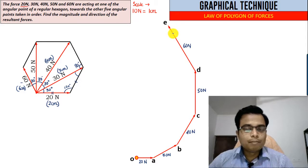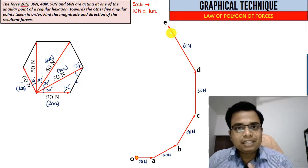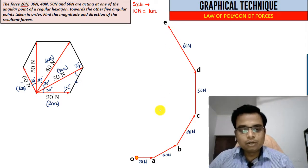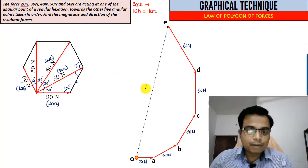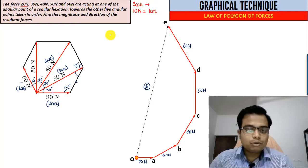But the resultant will be taken in the opposite order to complete the polygon, and this is the resultant. If you were to calculate the value or the magnitude of the resultant, the magnitude of the resultant is nothing but the length of OE or the closing side.